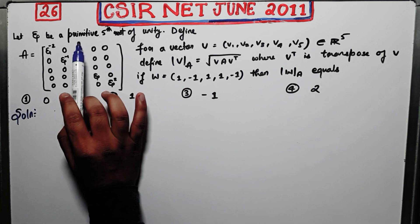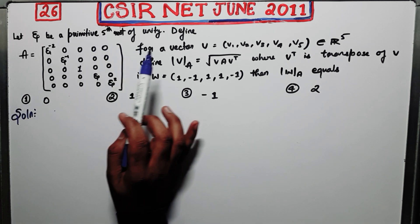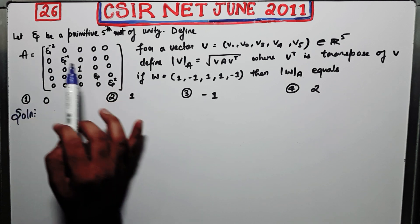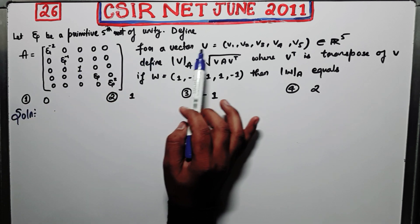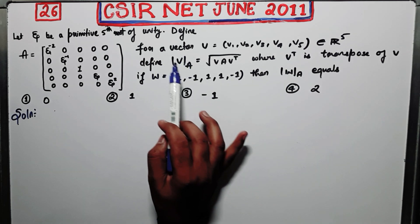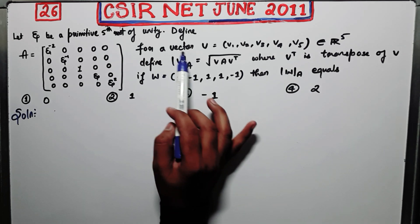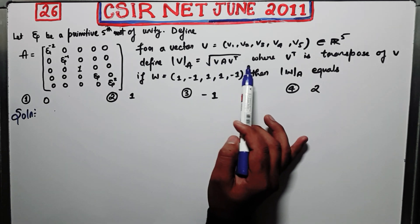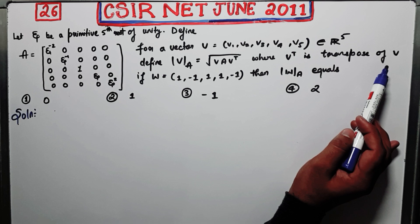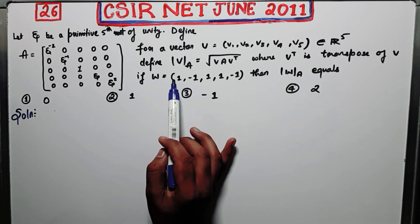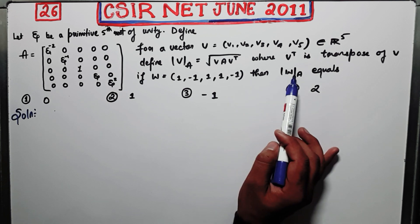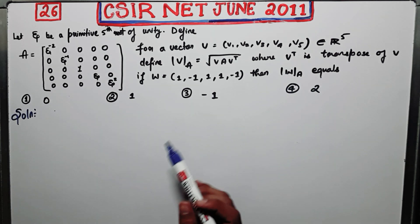Let Xi be a primitive fifth root of unity. Define A as equal to this matrix. For a vector V in R5, the notation |V|_A is defined as the square root of V·A·V^transpose, where V^transpose is the transpose of V. If W is equal to this given vector in R5, then we want to calculate |W|_A.